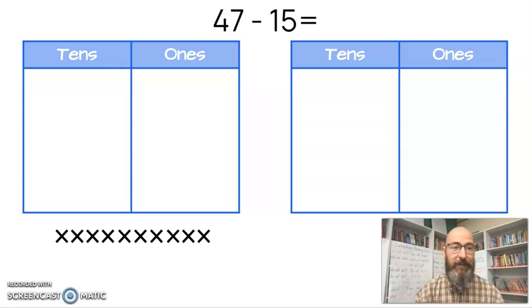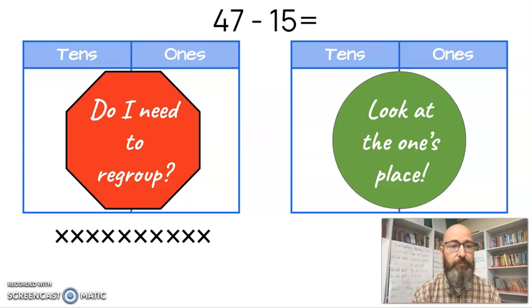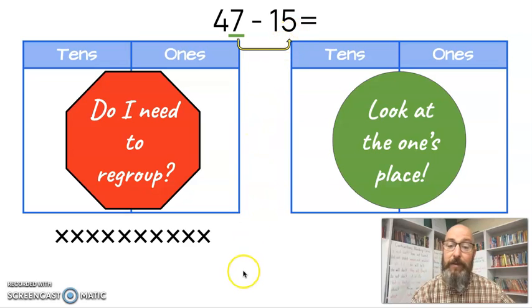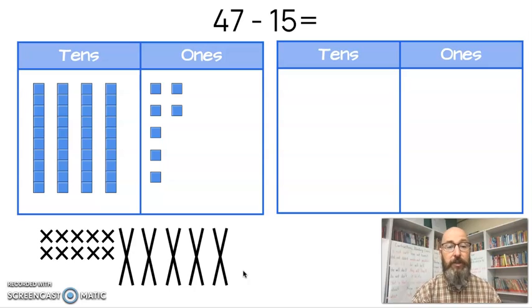47 minus 15. That's going to be our first question today. Now when you're doing a question with models, the first thing you need to ask yourself is, do I need to regroup? Well, how do I know? I have to look at the ones place. So when I look at the ones place in the minuend, the bigger number, I see a 7. And then if I compare it to the ones place of the subtrahend, I know that 7 is larger than 5. And if that number is bigger, then no, you don't have to regroup, which makes the question a little bit easier, honestly.